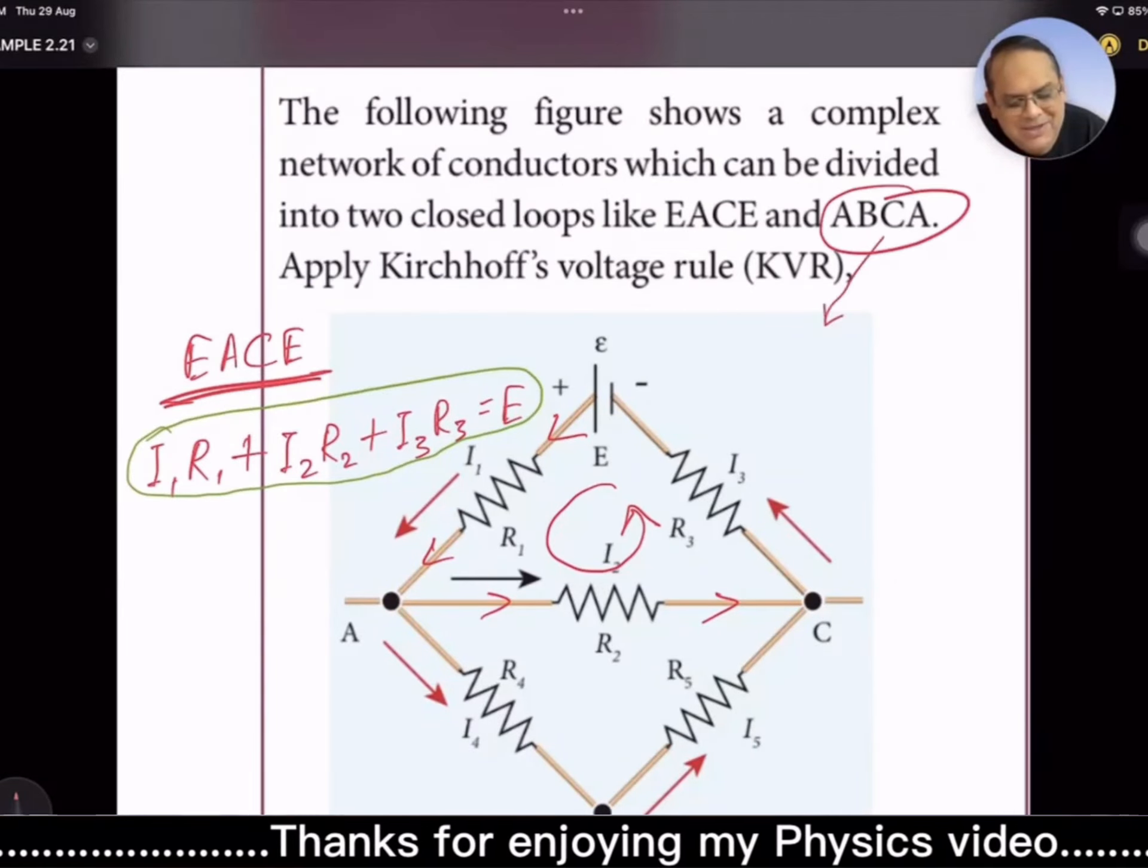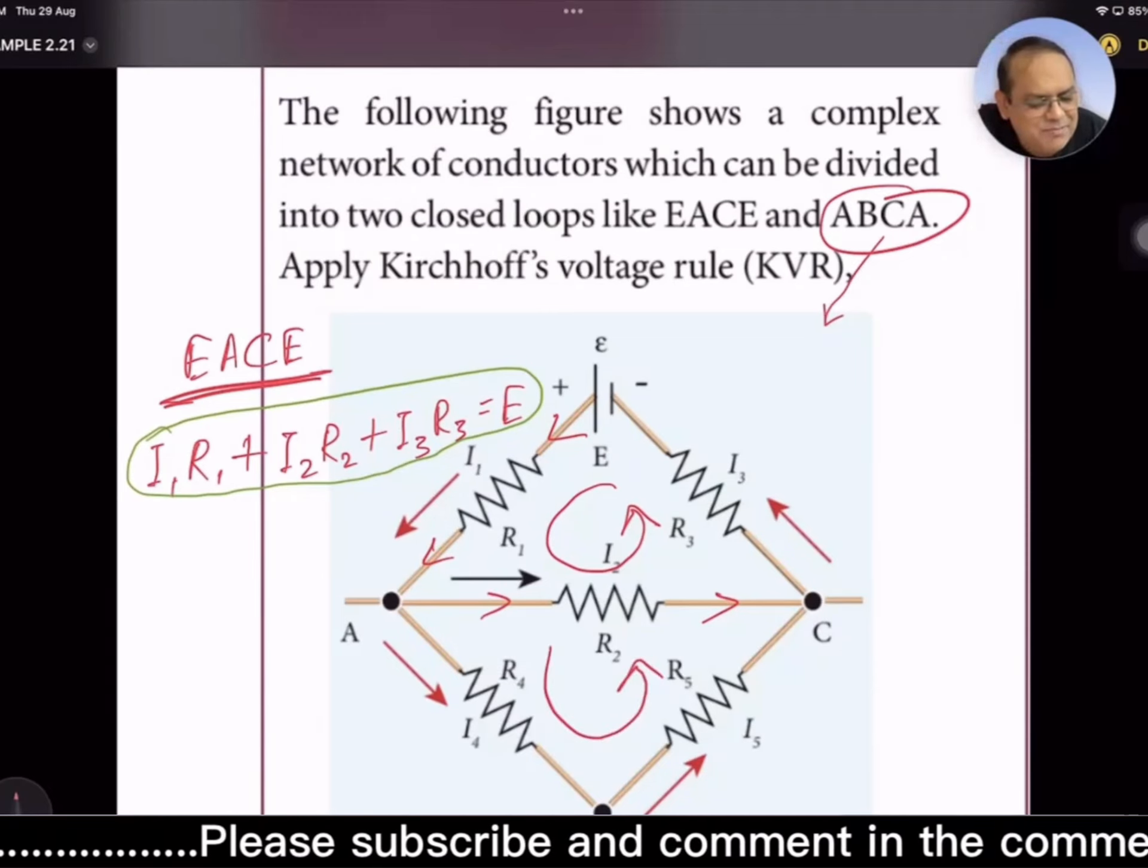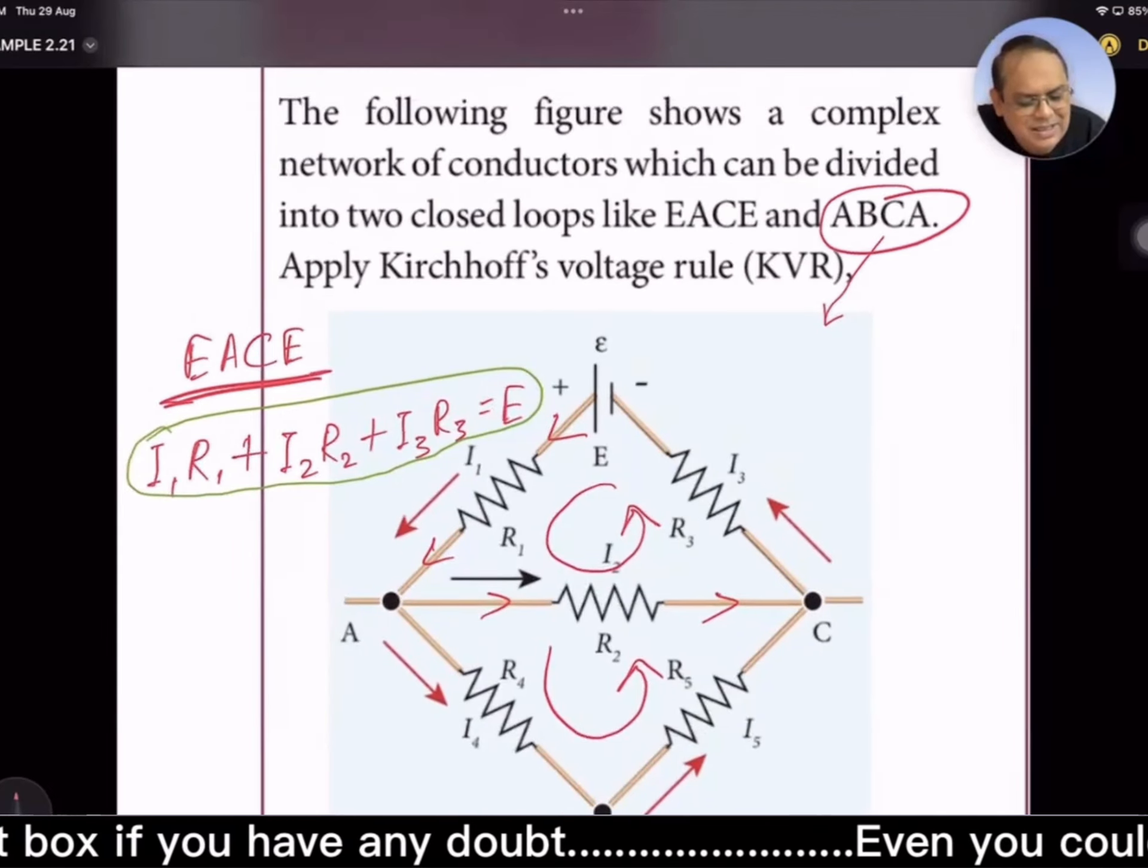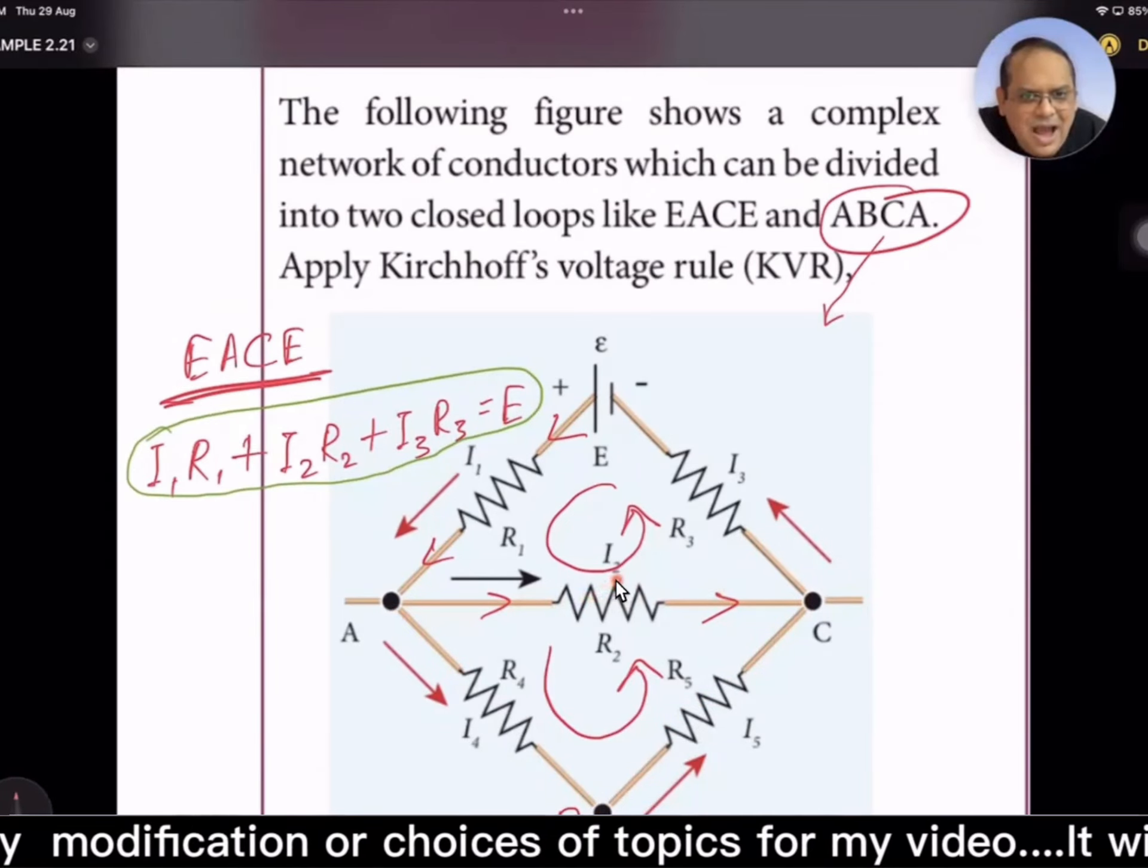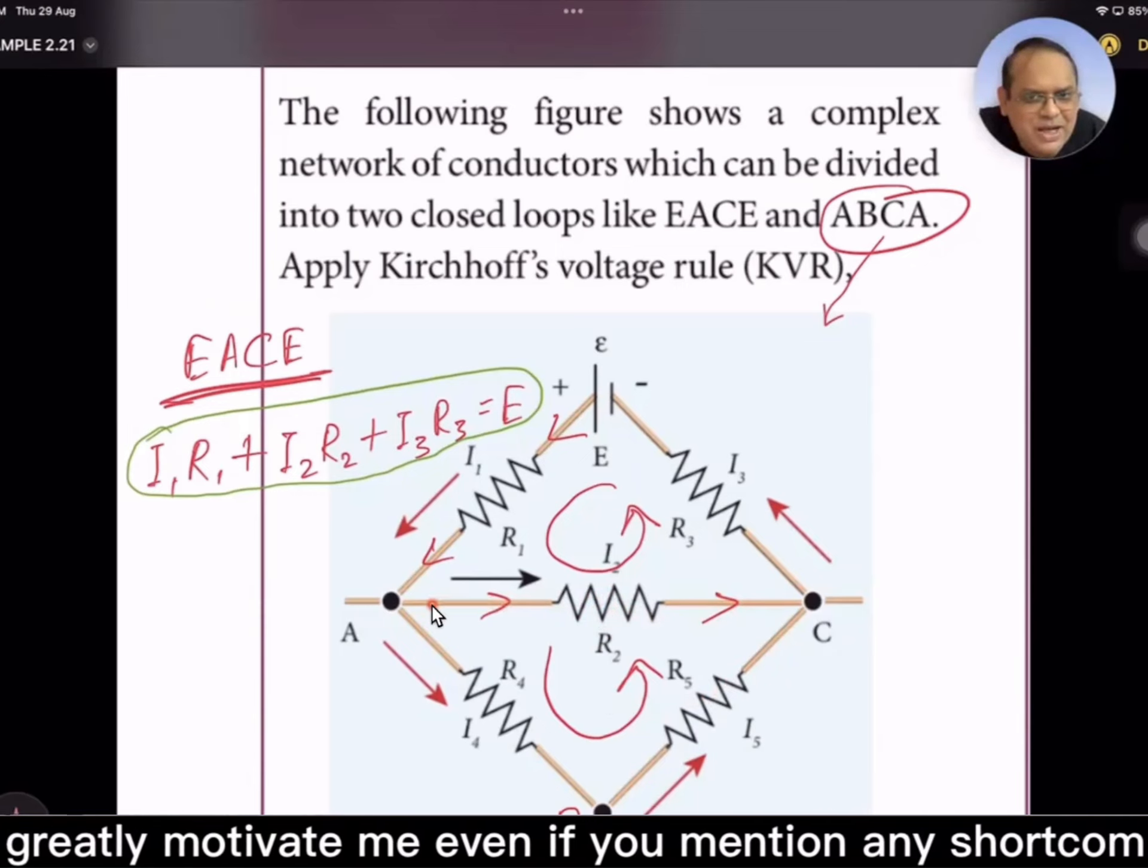Now another loop ABCA, that means the lower loop. There all things were positive, but when we start from ABCA, this I₂R₂ is coming negative because our traverse direction is opposite to direction of current.